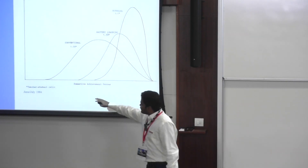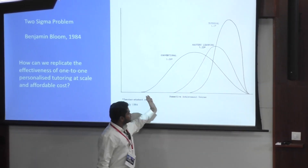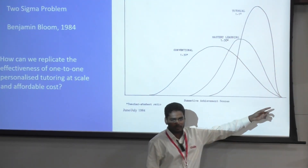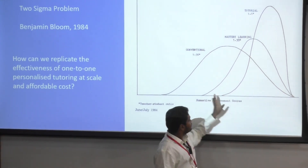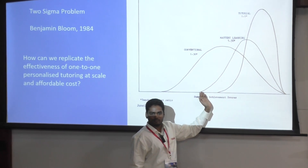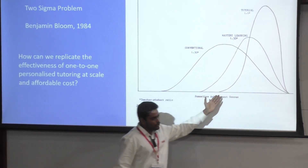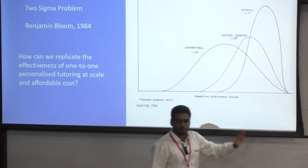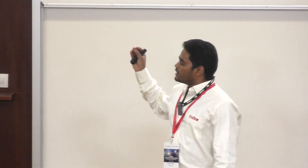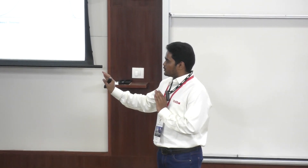If we plot the final summative results, the conventional group has a regular bell curve from zero to 100. The mastery learning group's lowest score itself is around 50 — performance improved significantly. And for the tutorial group, the lowest mark itself is 80 to 100. That is two standard deviations of improvement — a huge and significant result. Behavioral research proved that if one-on-one learning is available to a learner, it can be done. But how do you scale it? We can't give each learner a tutor. That's the two sigma problem: how do we replicate the effectiveness of one-on-one personalized tutoring at scale and cost?